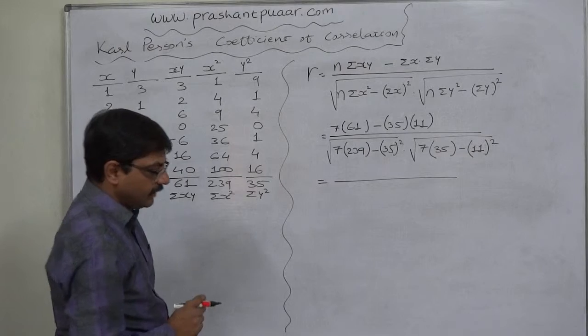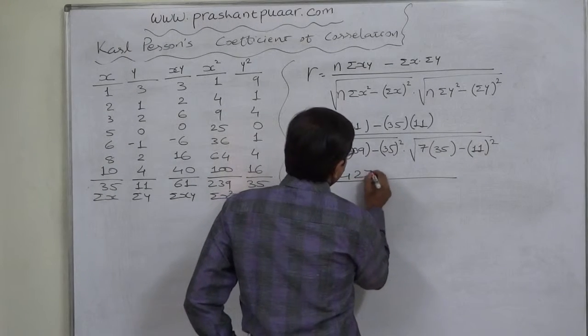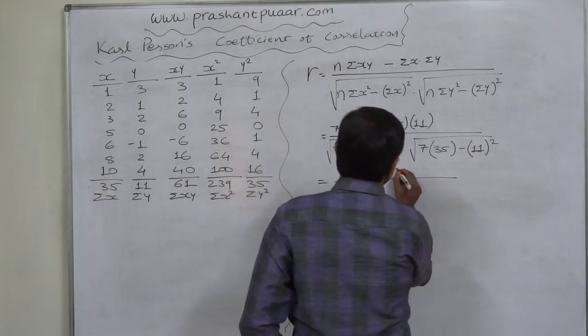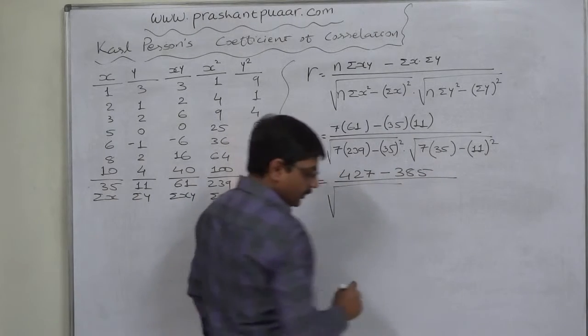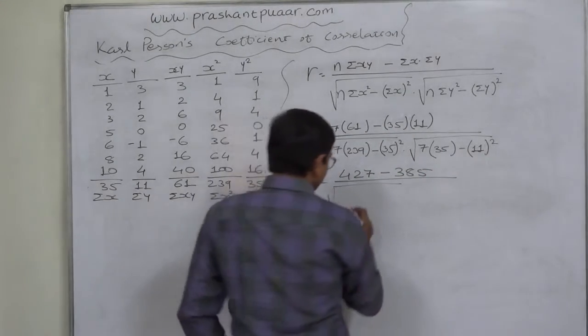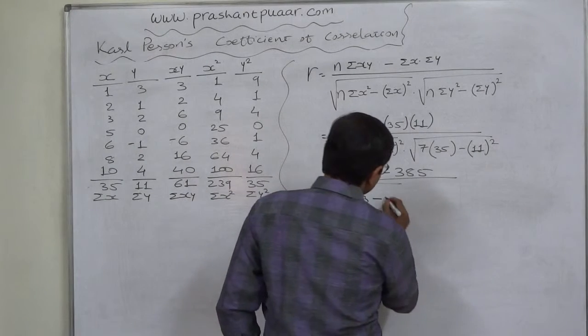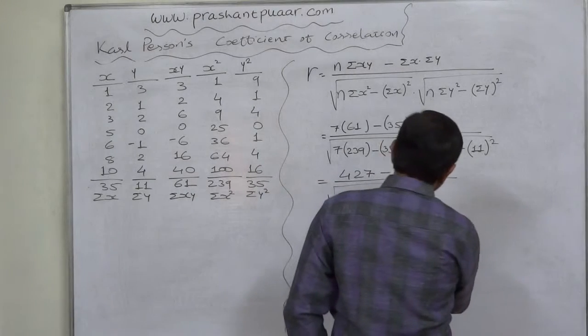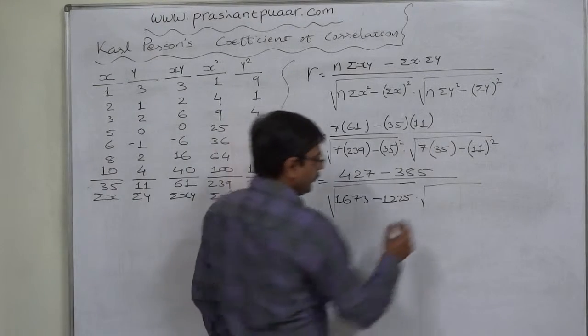7 into 61 comes to 427, minus 35 into 11, which is 385. Upon under root 7 into 239, which is 1673, minus 35 squared, 1225, into under root 7 into 35, which is 245, minus 11 squared, 121.